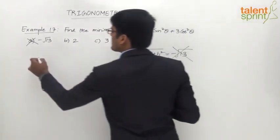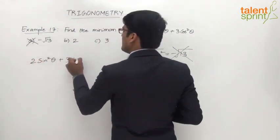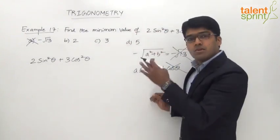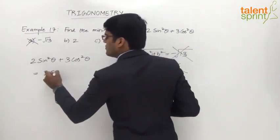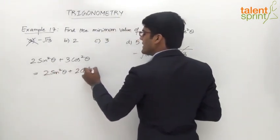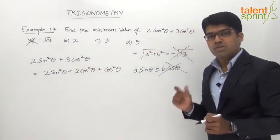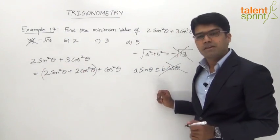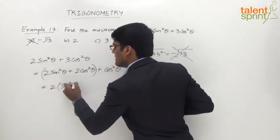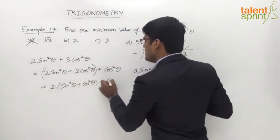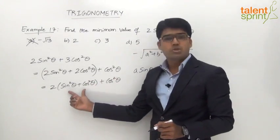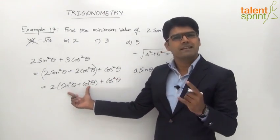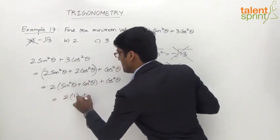So what is the correct answer? Let us look at 2·sin²θ + 3·cos²θ. One of the simplest methods is to split 3·cos²θ as 2·cos²θ + cos²θ. So 2·sin²θ + 3·cos²θ becomes 2·sin²θ + 2·cos²θ + cos²θ. Taking 2 common gives us 2·(sin²θ + cos²θ) + cos²θ. We know the trigonometric identity sin²θ + cos²θ = 1, so this part is a constant equal to 1.